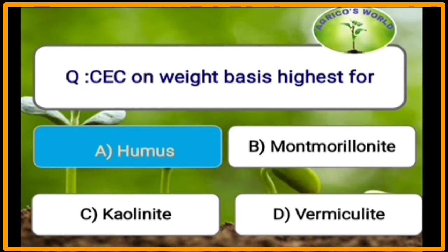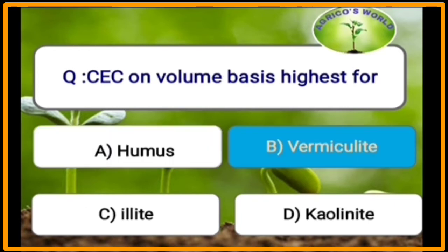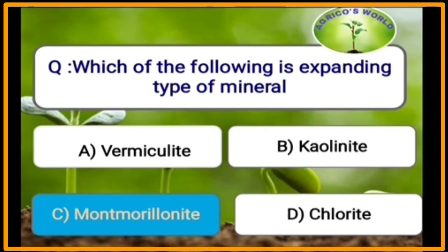Cation exchange capacity on a weight basis is highest for humus. Cation exchange capacity on a volume basis is highest for vermiculite, at 80 to 150 centimoles per kg. Lowest cation exchange capacity is for kaolinite, at 3 to 15 centimoles per kg.